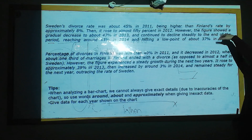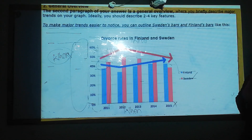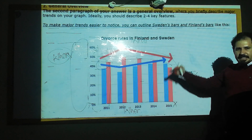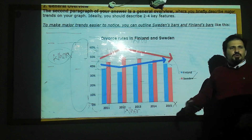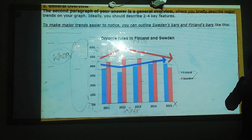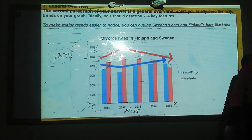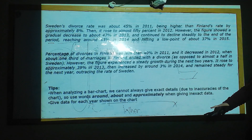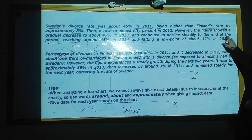However, the figure showed a gradual decrease to about 47% in 2013. In 2013, there is a gradual decrease of about 2-3%. Sweden's divorce rate showed a decrease in 2013, reaching approximately 47%. After this, we have two remaining parts, and we can say it continued to decline steadily to the end of the period.